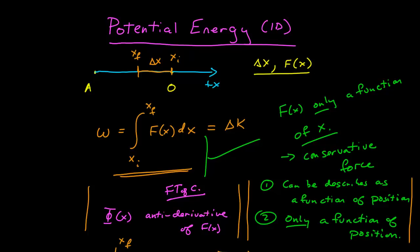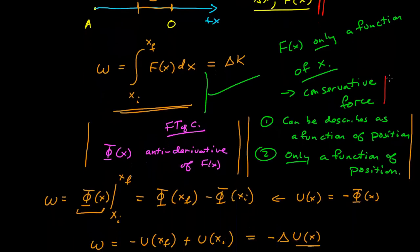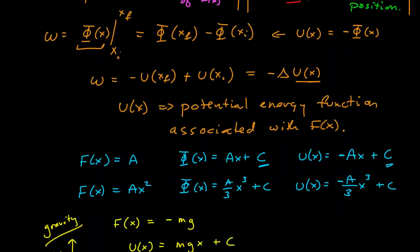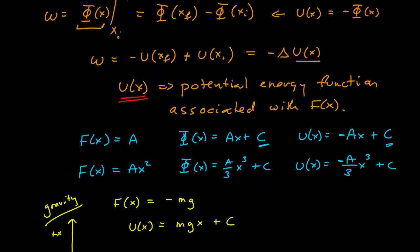In this video, I want to continue looking at the potential energy function in 1D. Last time we started with a force acting on an object in one dimension — the motion and the force all along one axis. We limited ourselves to a conservative force, defined as a function of position only. Given that, we could define a function which was the negative antiderivative of the force, and we called that the potential energy function.